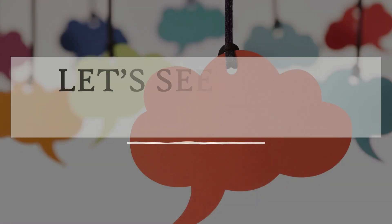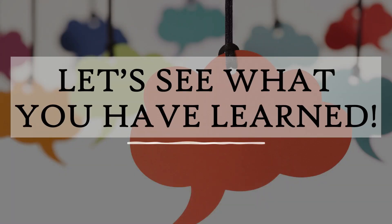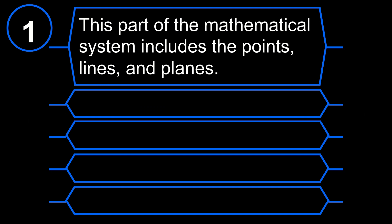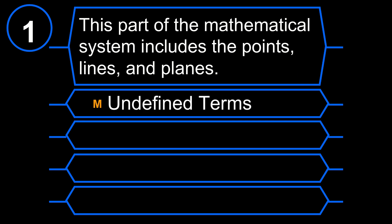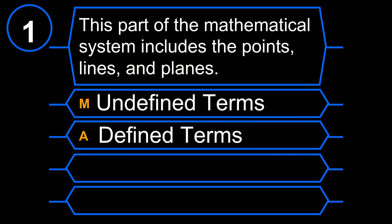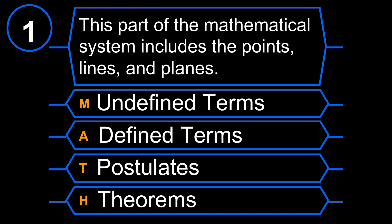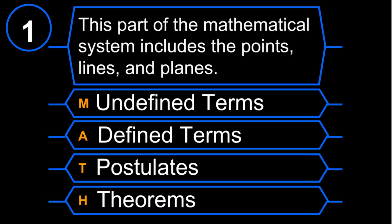Let us now see what you have learned. Are you ready? You may type your answers on the comment section — kindly type your name, section, and school with your answers. Number 1: This part of the mathematical system includes the points, lines, and planes. M. Undefined terms. A. Defined terms. T. Postulates. H. Theorems. You have 10 seconds to answer.